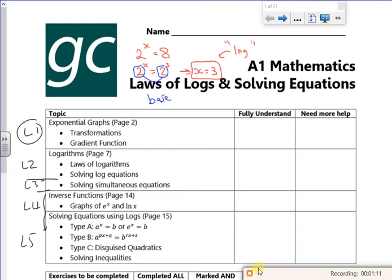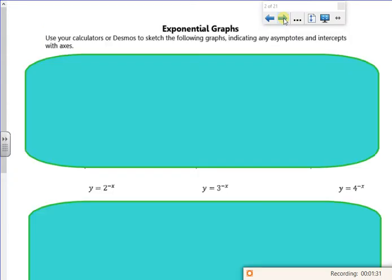So we use logs instead of trying to express it as like 2 cubed or something like that. So it might not be 2 to the x is 8, it might be 2 to the x is 9, in which case, you've got no idea what the x value is because it won't take an integer value.